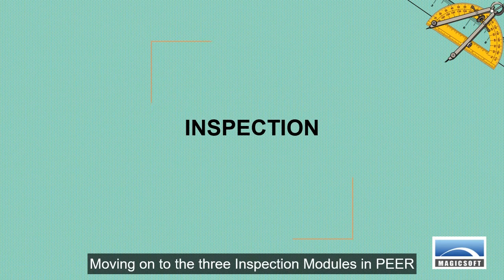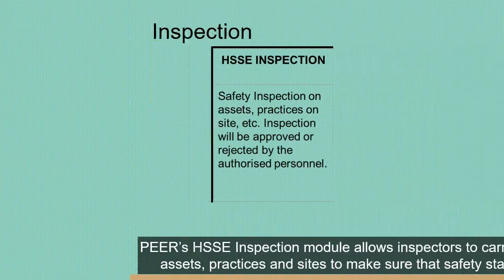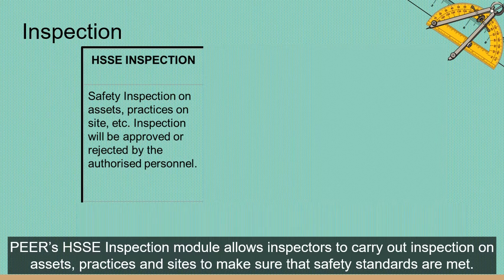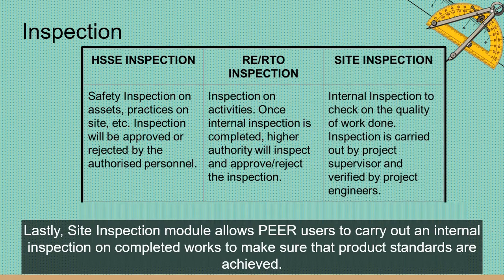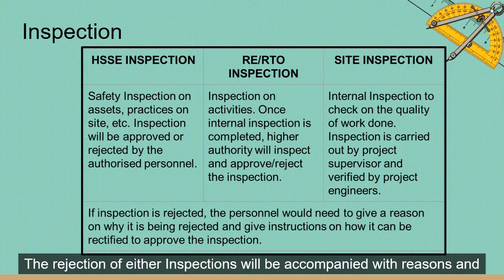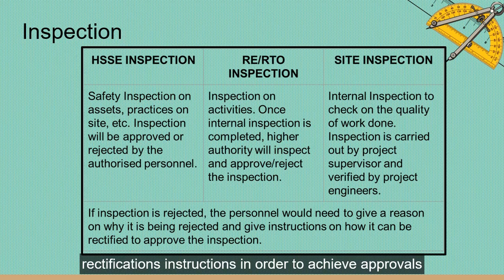Moving on to the three inspection modules in Peer. Peer's HSSE inspection module allows inspectors to carry out inspections on assets, practices and sites to make sure that safety standards are met. The RE-RTO inspection module allows external inspectors to carry out quality assessment checks on deliverables to ensure quality standards are met. Lastly, the site inspection module allows Peer users to carry out an internal inspection on completed works to ensure product standards are achieved. Rejection of any inspection will be accompanied with reasons and rectification instructions.